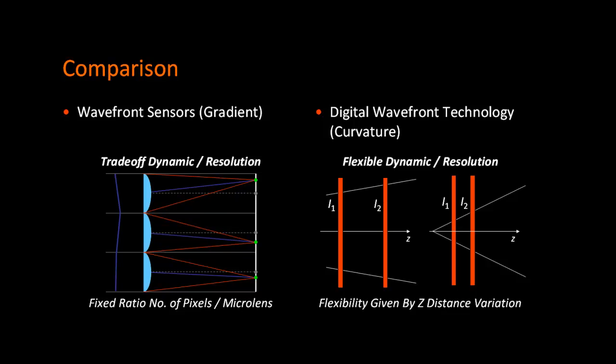In digital wavefront technology, the dynamic range can be flexible by adjusting the space between image planes, so both collimated and divergent beams can be measured.